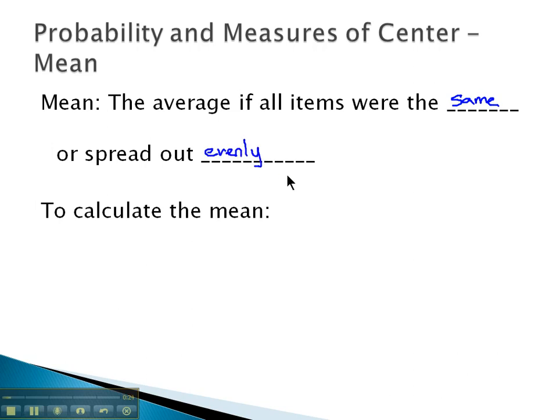And the way we calculate this value is we add the values and divide by how many values there are. This is probably what people think of normally when we hear the word average, is the mean. So let's take a look at calculating the mean of several numbers.